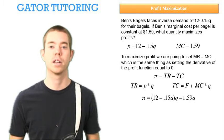Profit, therefore, is 12 minus 0.15Q, which is price, times quantity minus 1.59Q.